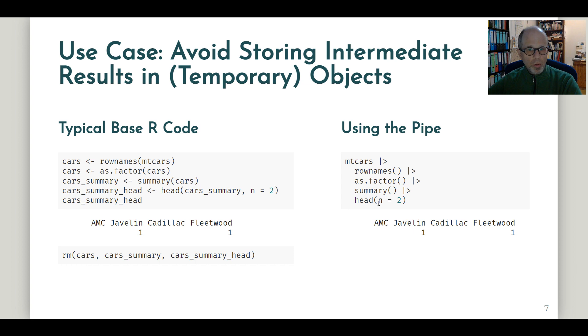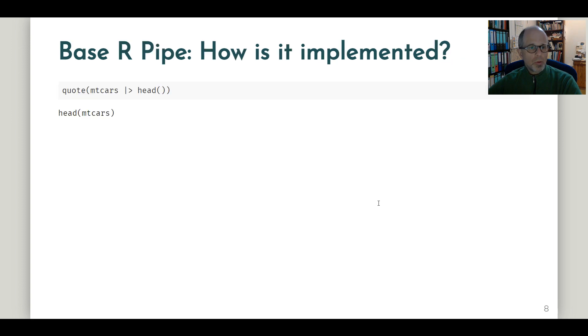Right, so these were two use cases for the pipe. And now we could wonder how is this pipe operator implemented in base R. And here the quote function comes in quite handy. It captures an R expression and returns the expression without evaluating it. So we can see how this pipe notation for our first simple example just applying the head function to the mtcars data set is captured. And the result is head mtcars. So we get back the original notation that we may all be used to.